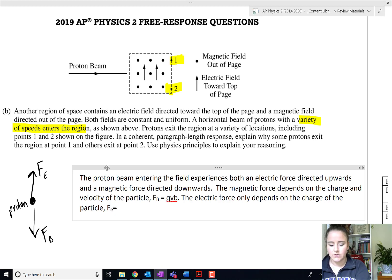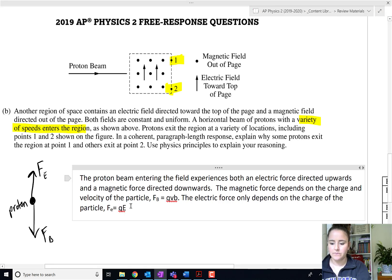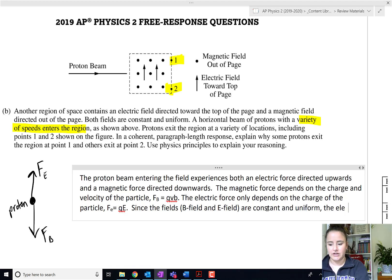The magnetic force depends on the charge and velocity of the particle. The magnetic force equals QVB. The electric force only depends on the charge of the particle. Force electric equals Q times the electric field. We should probably say that it depends on the field strength. Since the fields, B field and E field, are constant and uniform, the electric force will be the same on all of the particles.